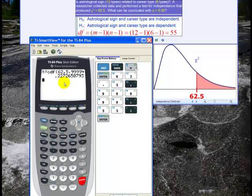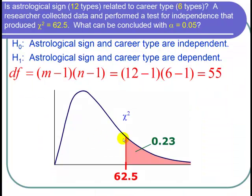So let's go back to our PowerPoint. Okay the p-value was about 0.23 and that's the area shaded in to the right of 62.5 for the chi-squared value.